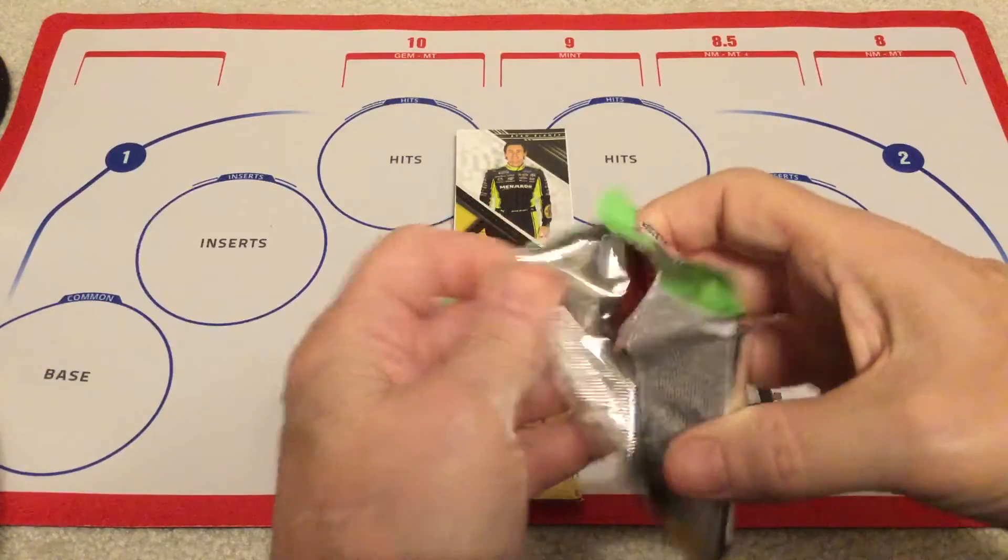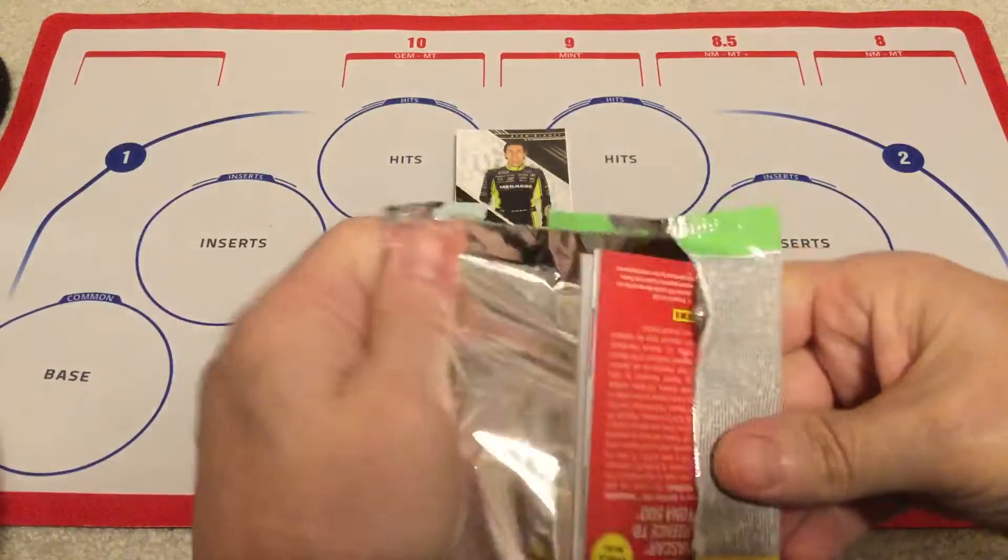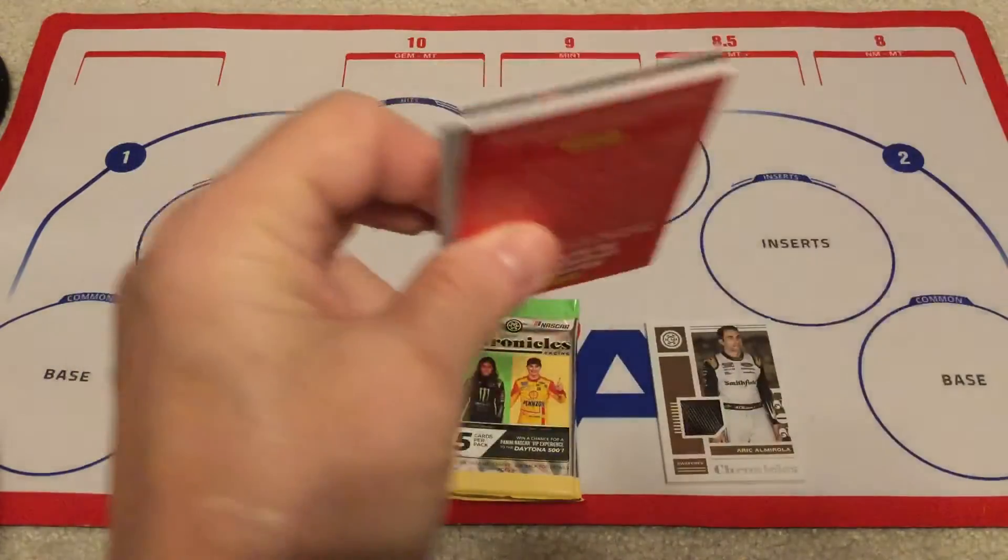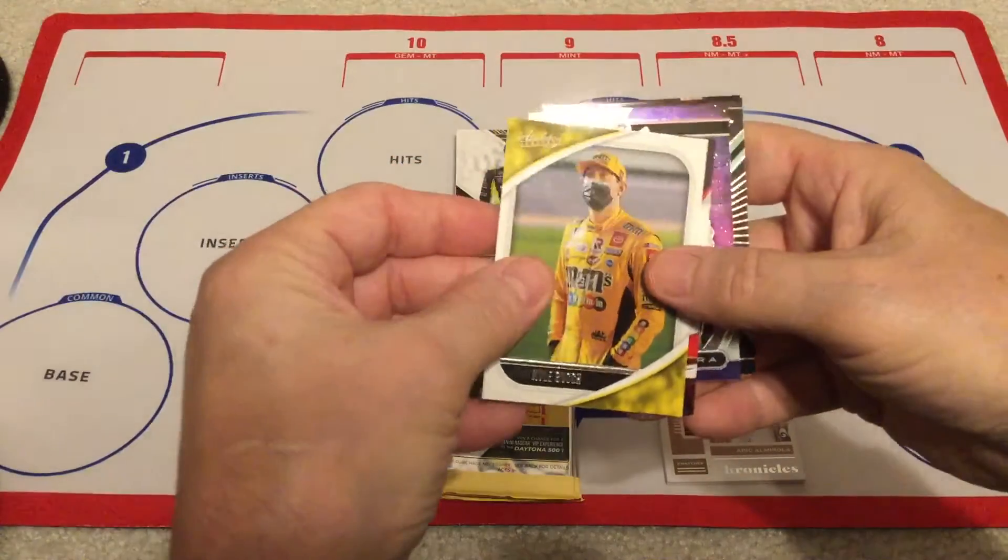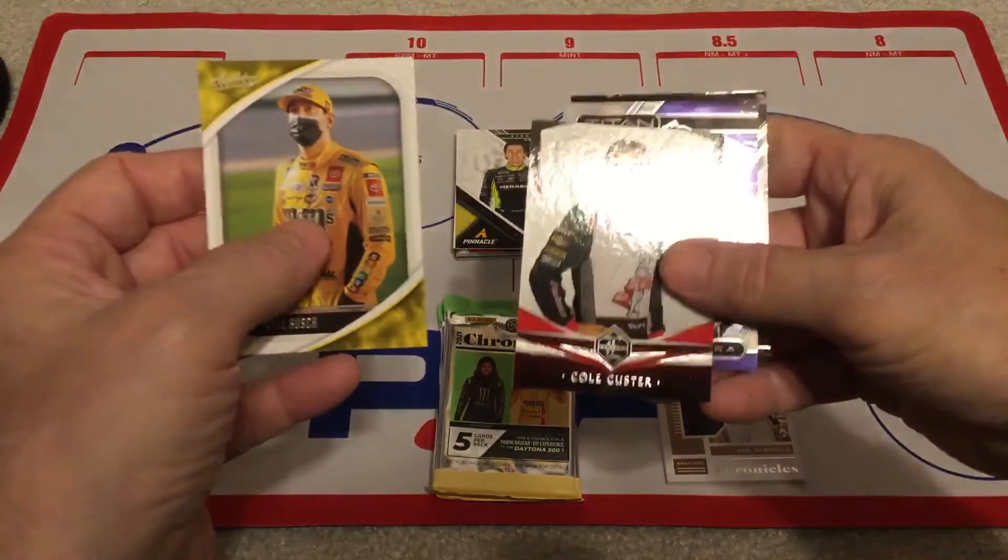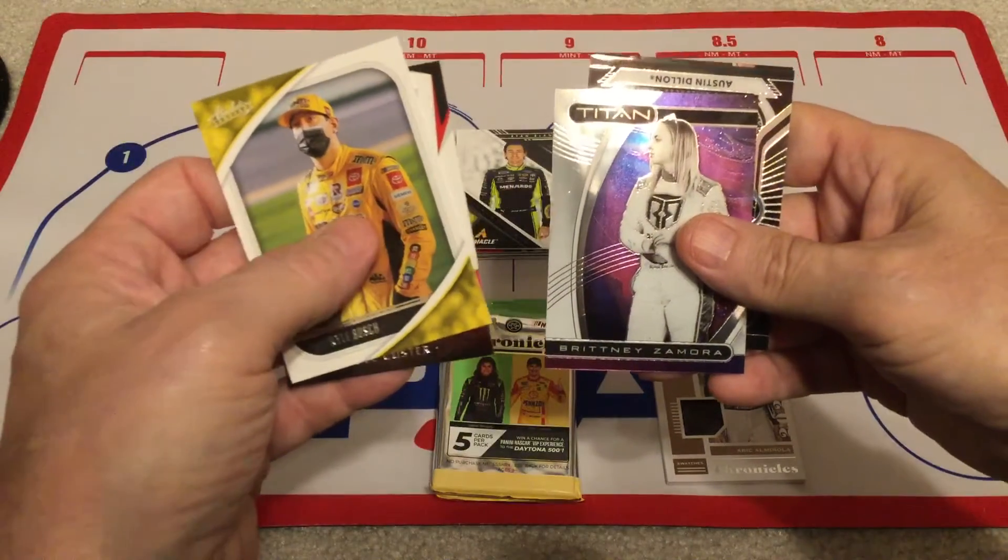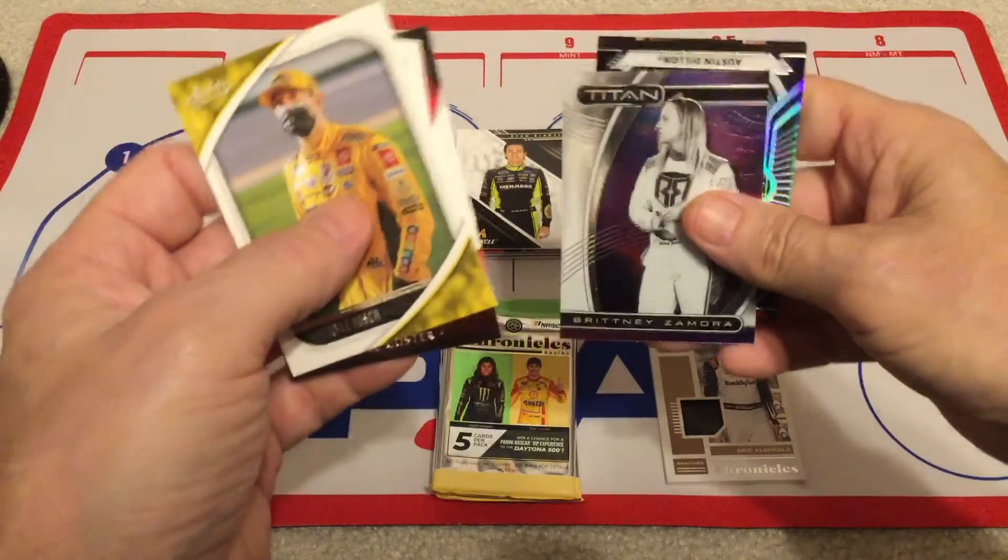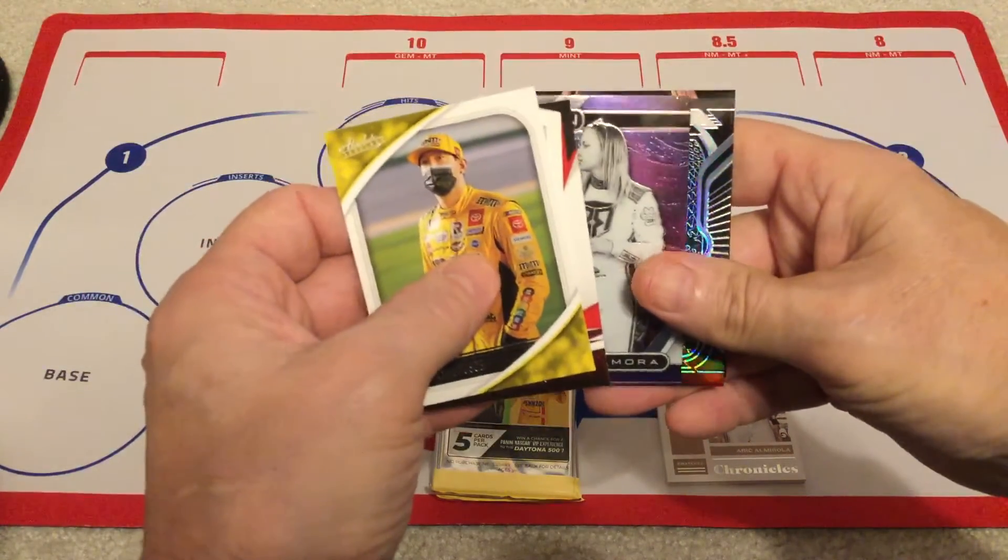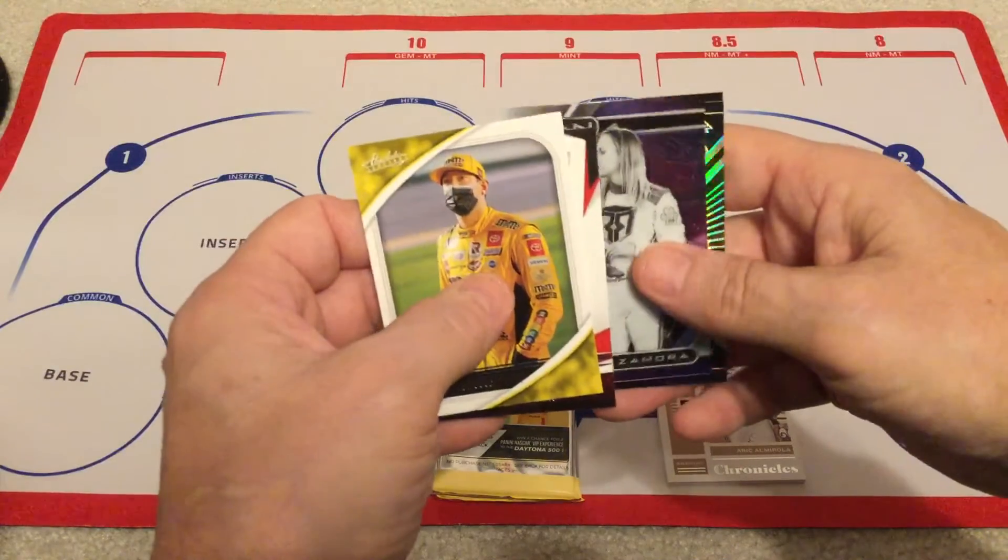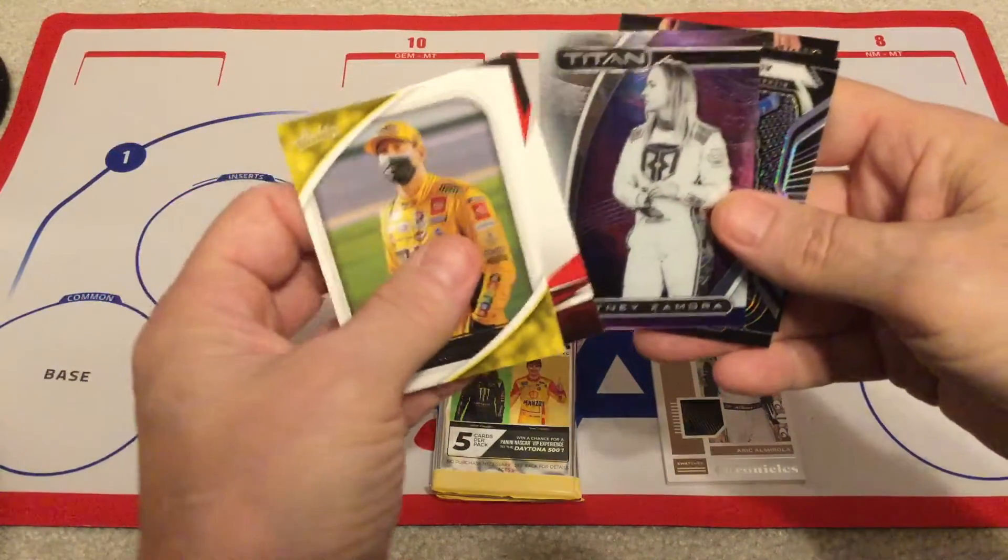So that was a sponsor obligation he had to fulfill. All right, here's the next pack. Kyle Busch, Cole Custer in Limited, Titan with Brittany Zamora. I like Titan. I don't know if you guys saw on NASCAR radio where we talked about this year's contenders, and I did my own ranking of these cards, and Titan is my favorite of all these different brands within Chronicles.